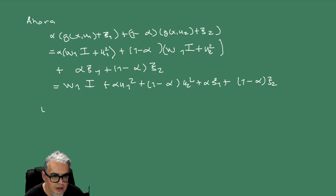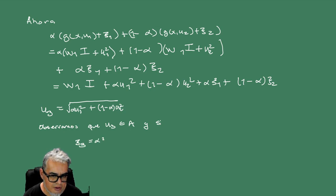Todo esto de aquí es lo mismo que W1 por I de t más alfa U1 cuadrado más 1 menos alfa U2 cuadrado, más alfa ξ1 más 1 menos alfa ξ2. Ahora vamos a hacer una U3 que va a ser la raíz de alfa U1 cuadrado más 1 menos alfa U2 cuadrado. Lo que hay que observar acá es que esta U3 que acabamos de definir está completamente contenida en A. Y si hacemos ξ3 igual a alfa ξ1 más 1 menos alfa ξ2, tenemos que ξ3 es menor igual que cero.